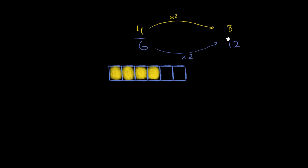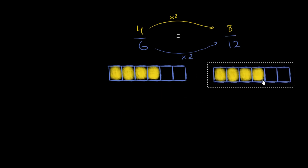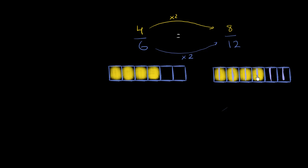So I'm claiming that 8 twelfths is the same fraction as 4 sixths. To visualize that, let me redraw this whole. But instead of having 6 equal sections, we now have 12 equal sections — each of the 6 we can turn into 2. That's essentially what multiplying by 2 does: we now have twice as many equal sections. Now that we have twice as many equal sections — 1 through 12 — how many of them are actually shaded in yellow? It's 8 twelfths. And there's no magic here: if we have twice as many sections, we're going to have to shade in twice as many of them in order to have the same fraction of the whole.